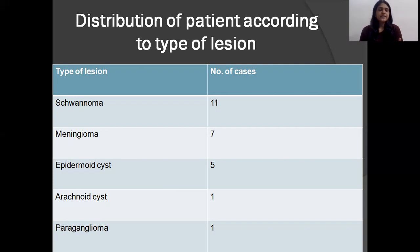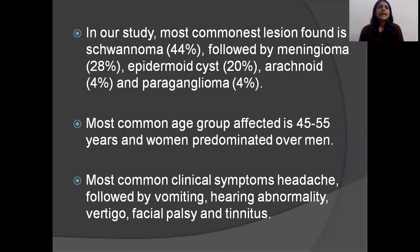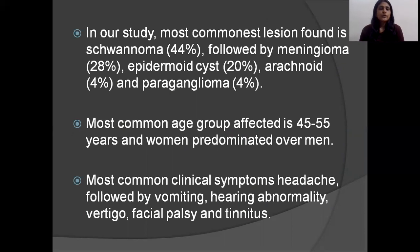Arachnoid cyst and paraganglioma are very less common. The commonest lesion found in my study is schwannoma in 44% of cases. The most common age group involved is 45 to 55 years with female predominance. The most common symptom is headache followed by vomiting.